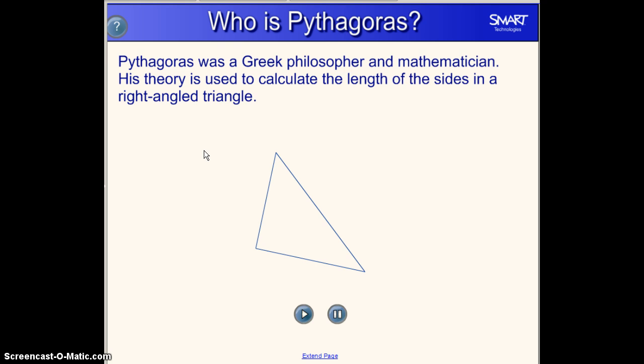So who is Pythagoras? Well, Pythagoras was a Greek philosopher and mathematician. His theory is used to calculate the lengths of sides in a right triangle.